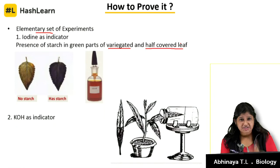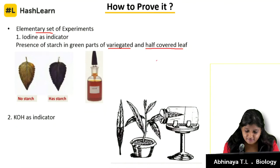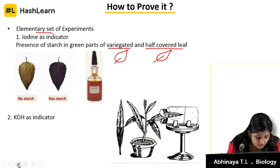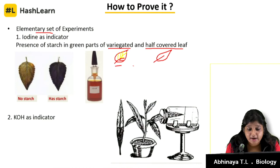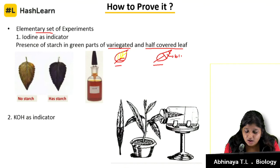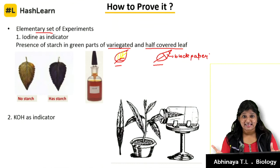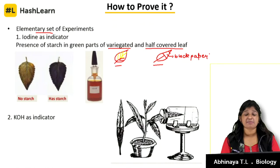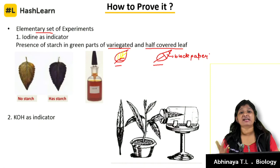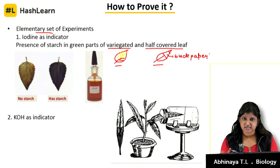We exposed the variegated leaf and a half-covered leaf — covered with black paper — to sunlight. We poured iodine solution on the leaf. Surprisingly, we saw that wherever the area was green, it got converted to blue. Iodine actually indicates the presence of starch. So as we put a drop of iodine onto the leaf, wherever it was green it turned blue. This indicates that in the presence of sunlight only, photosynthesis takes place and the end product is starch.